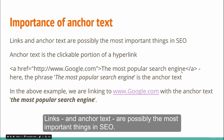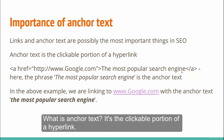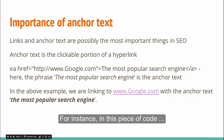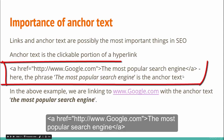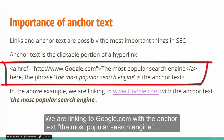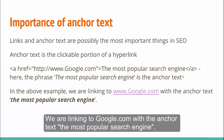Links and anchor text are possibly the most important things in SEO. What is anchor text? It is the clickable portion of a hyperlink. For instance, in this piece of code, we are linking to Google.com with the anchor text 'the most popular search engine.'